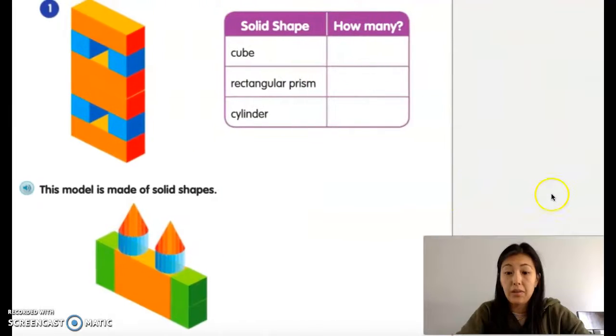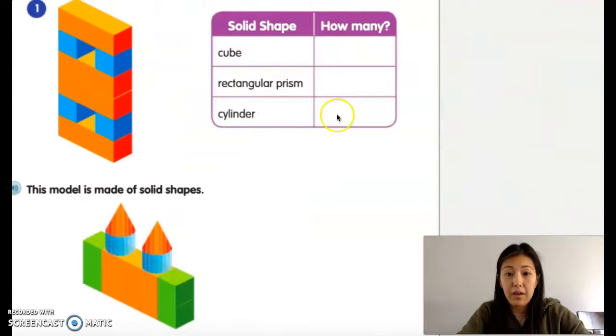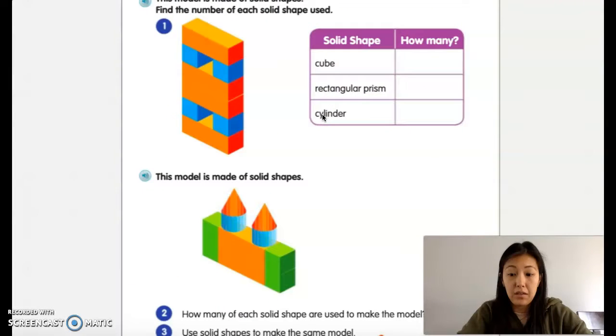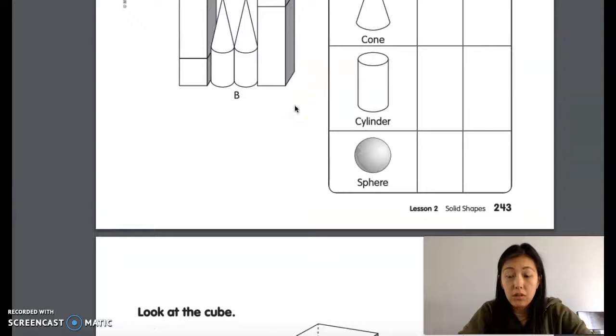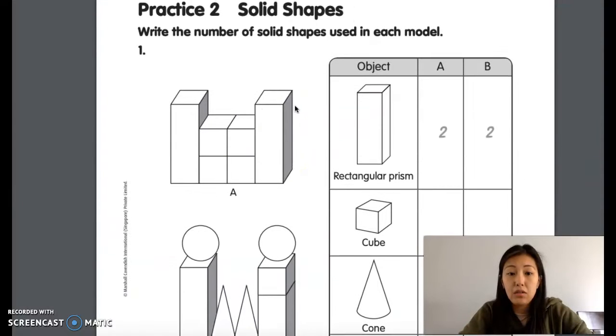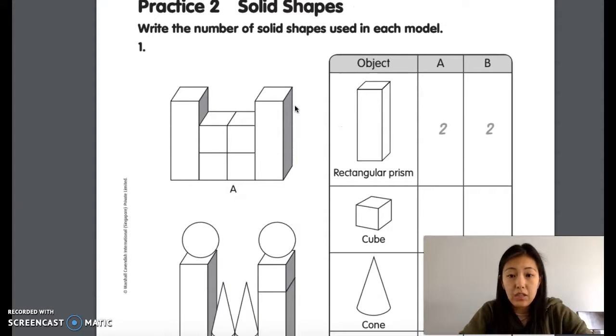Okay so there are a lot of models here that have solid shapes. What you're going to do for today's math assignment is you will be going to turn to page 243 and you need to write the number of solid shapes used in each model.